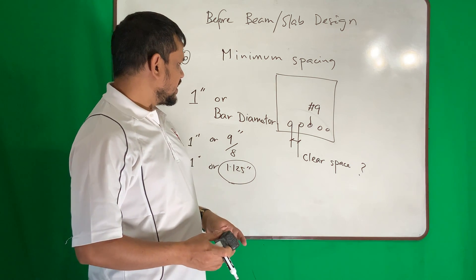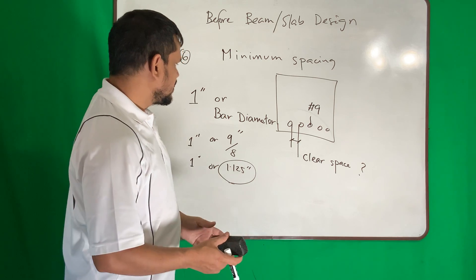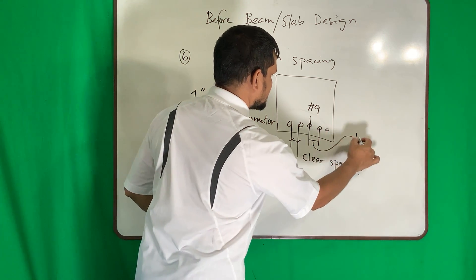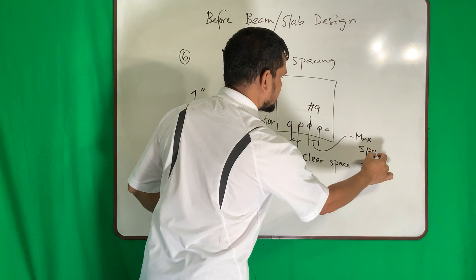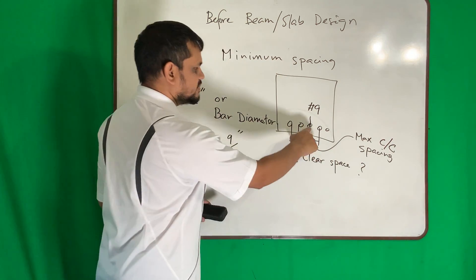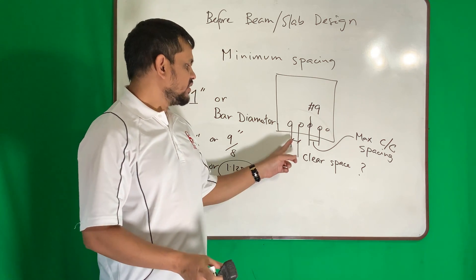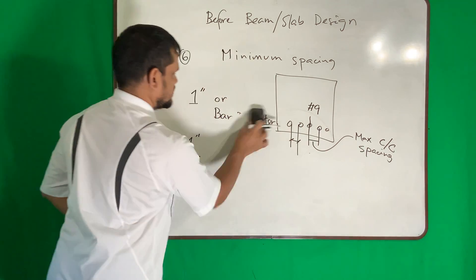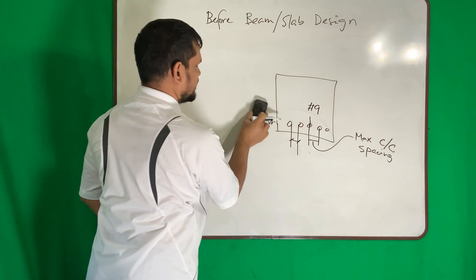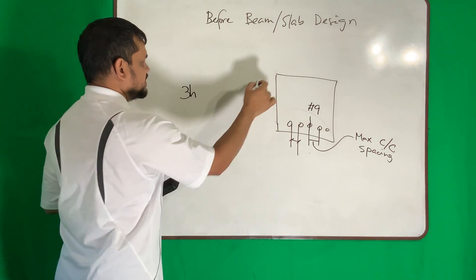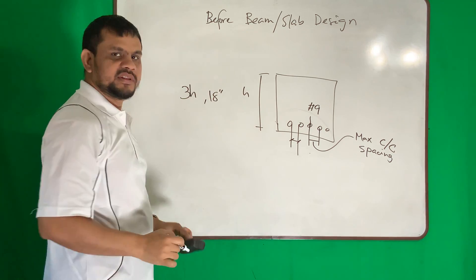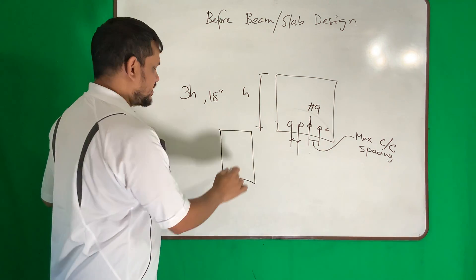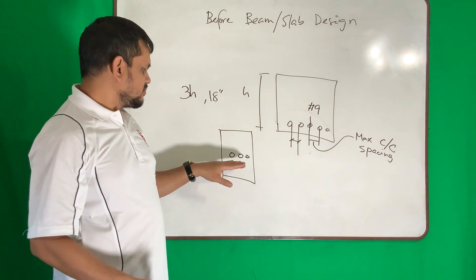Number seven is maximum spacing. What is the maximum center-to-center spacing between two bars? For flexural reinforcement, the maximum spacing should be 3 times the member depth h, or 18 inches, whichever is smaller.